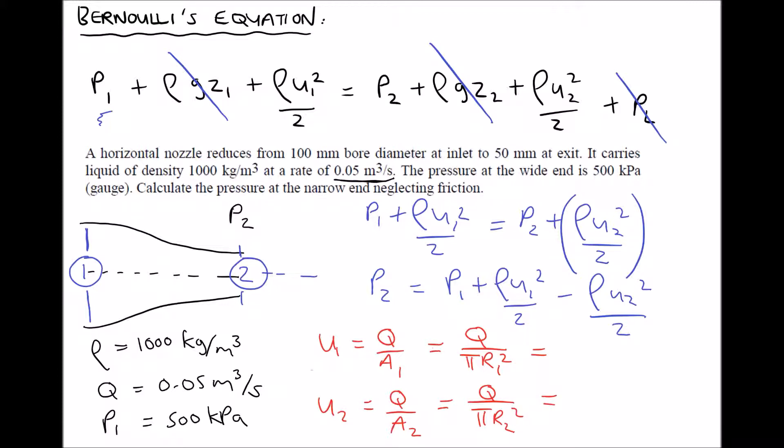So we know at the wide end, the diameter is 100 mm. Therefore, the radius is 50 mm. And dividing 50 by 1000, we get 0.05 for the radius in meters. So calculating u₁, we have the volume flow rate, 0.05 divided by π times 0.05 squared, giving us a velocity u₁ equal to 6.366 meters per second.